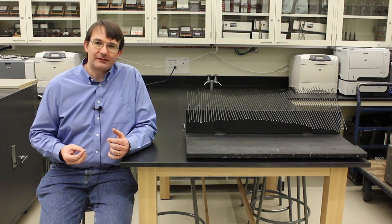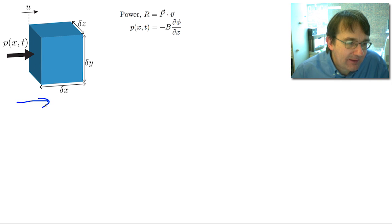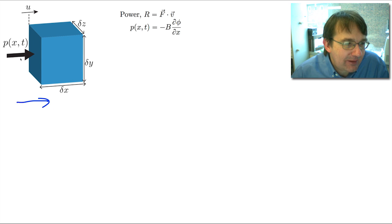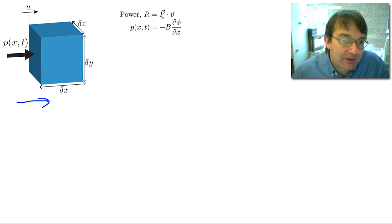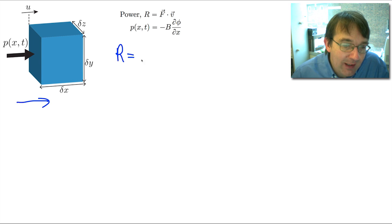Let's look in detail at the power of an acoustic wave. We have a pressure deviation with a wave coming in, and just as we did for a wave on a string, this pressure deviation relative to the normal pressure of the fluid is going to cause a fluid element to move. This force generates power, because the power of a force is the dot product of the force vector with the velocity vector. We'll call the power R to avoid confusion with pressure. This force is the pressure deviation multiplied by the area of the face of the fluid element: little p times delta y times delta z.